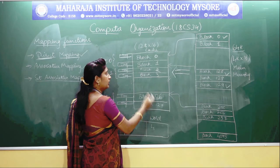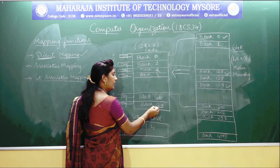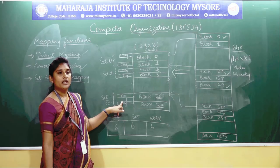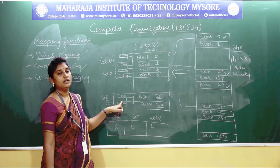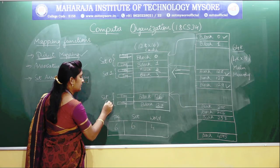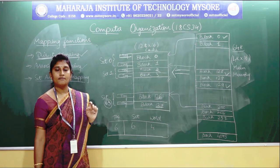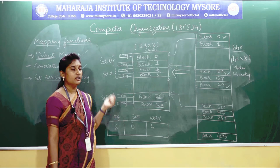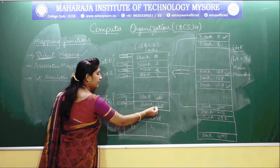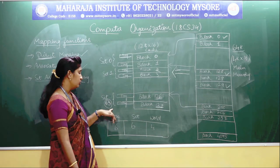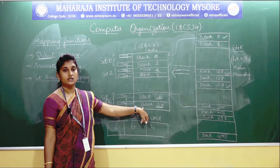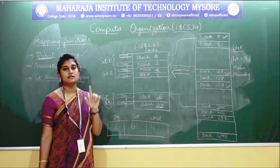In the cache memory, in this example you have 127 blocks — so you have 127 tags in the cache memory. Instead of having 127 tags, you have reduced them to 63 sets. So instead of searching 127 times, you have reduced the search operation to 63. This is how you reduced the number of searches and also increased the access time.